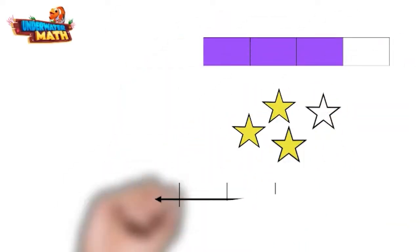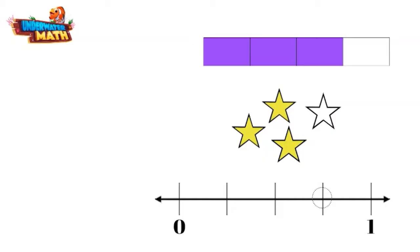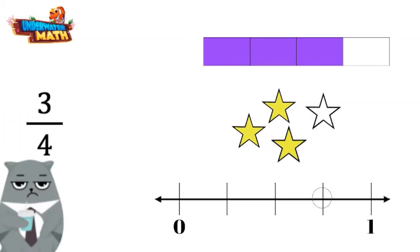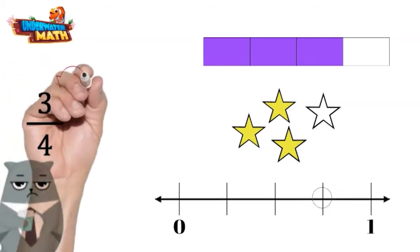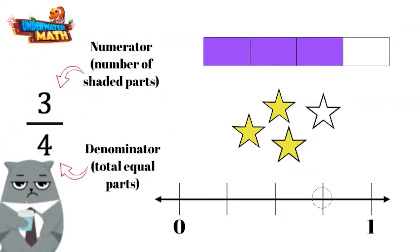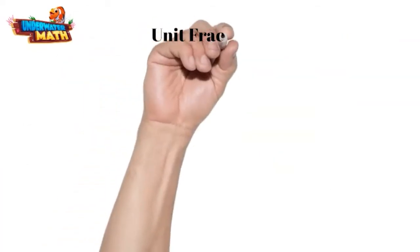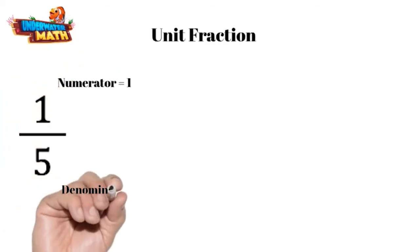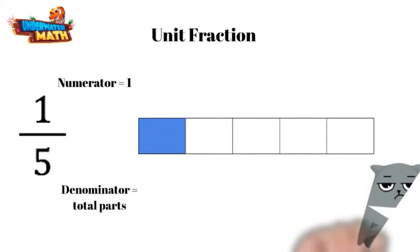Sets and number lines — all of these models show the fraction three-fourths. The numerator represents three parts shaded, and the denominator represents the four total equal parts. In this video we will be looking at specific types of fractions called unit fractions. The numerator in a unit fraction is always one, and the denominator is the total number of equal parts.